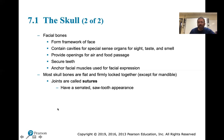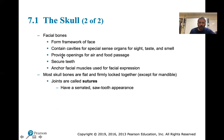The facial bones form the framework of the face and contain cavities for special sense organs - sight, taste for the tongue (hypoglossal), and smell (olfactory, cranial nerve one). They provide openings for air and food passage, turbulence through the conchae and septum. They secure the teeth in alveolar sockets called gomphoses in the maxillary bone and mandible. Most skull bones are flat and firmly locked together except for the mandible.